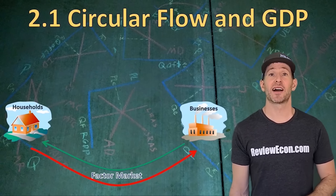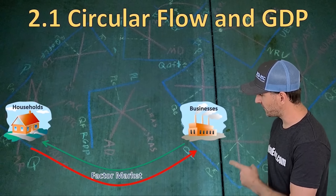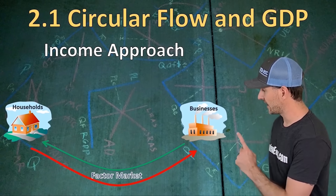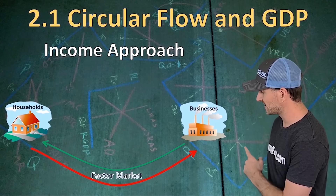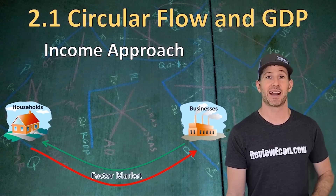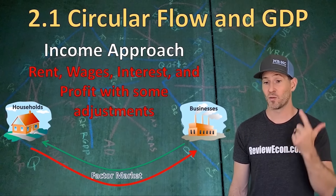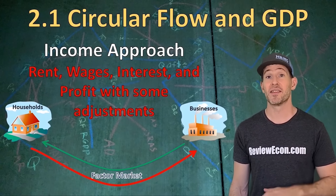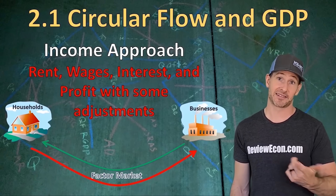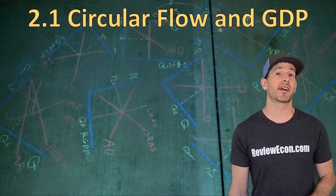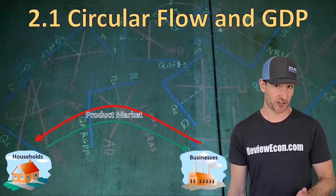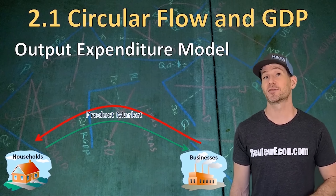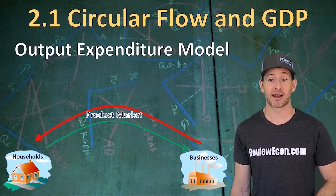Another way of calculating GDP focuses on the factor market — it's called the income approach. Here we look at the money that goes from businesses to households in the factor market: rents, wages, interest, and profit, with some minor adjustments like taxes and depreciation. The method that shows up most on the AP Macroeconomics exam is the output expenditure model for calculating GDP.